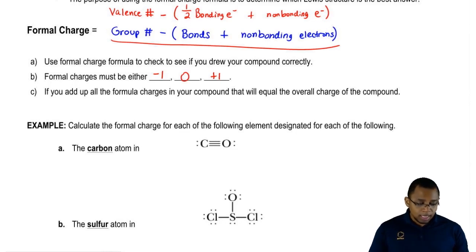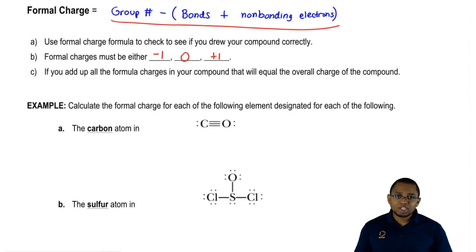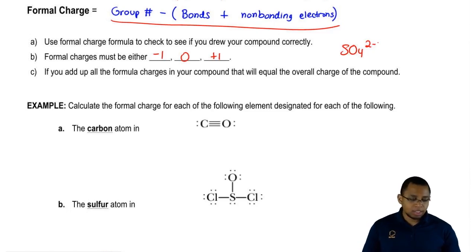Next and most importantly, if you add up all of the formal charges of each individual element, they have to add up to the overall charge of the compound. Let's say we have to draw SO4 2-. When we draw it and we take the formal charge of all of the oxygens plus the sulfur, their total is supposed to give us back the charge of the compound, minus 2.